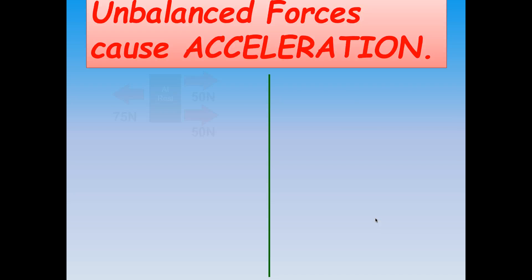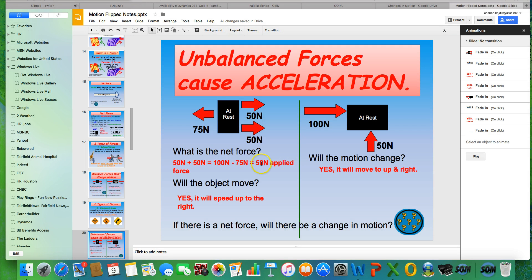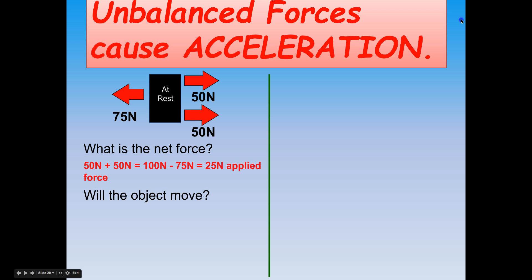Let's see how unbalanced forces cause acceleration using net force diagrams. Here we have an object at rest. There are two vectors on the right side of the box moving in the same direction, so we add those: 50 newtons plus 50 newtons equals 100 newtons. Then we have 75 newtons working in the opposite direction, so we subtract, ending up with a net force of 25 newtons. The box will move in the direction of the larger force — to the right — and will accelerate and get faster as long as the forces remain unbalanced.